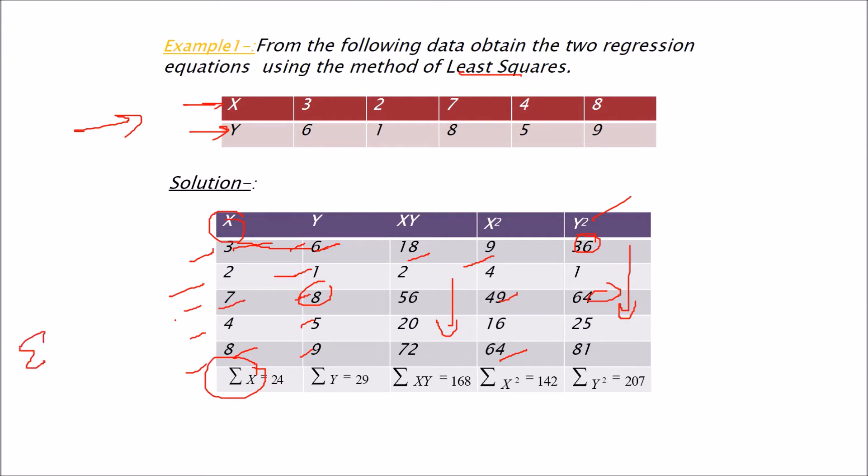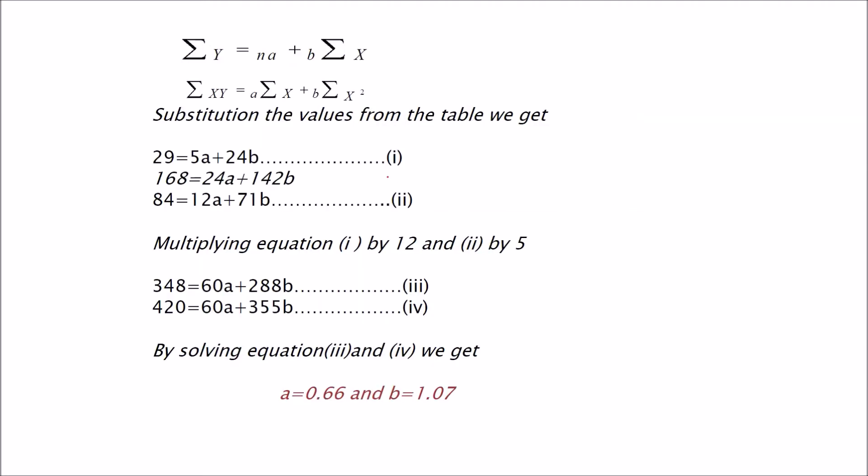Sigma means addition of the values. Add all these column values and you'll get sigma X, sigma Y, sigma XY, sigma X square and sigma Y square. Now you have these expressions that I just indicated. Just place this value and you know how to solve linear equations. This is the way of solving the linear equation. We are interested in values of A and B. So when you solve it, the value of A and B would be 0.66 and 1.07.